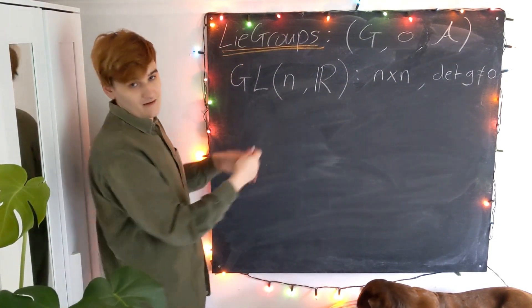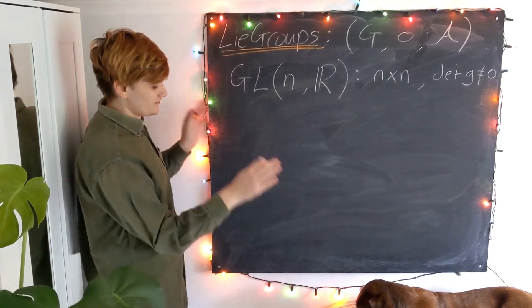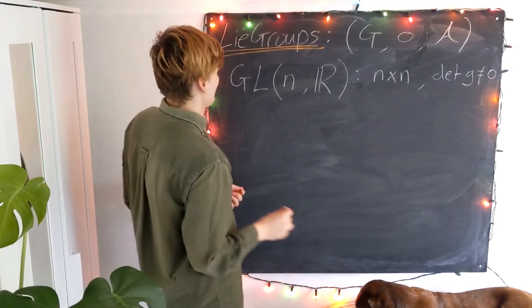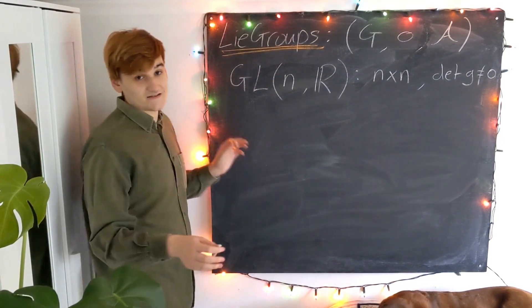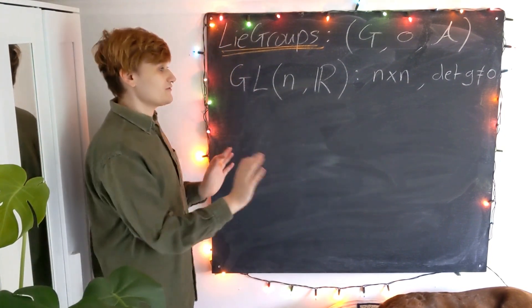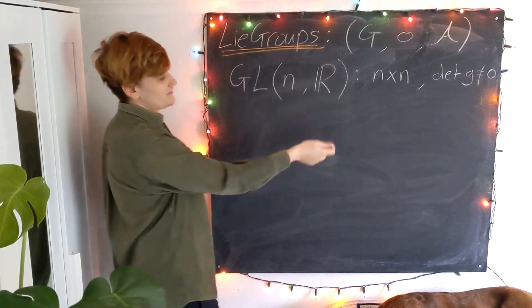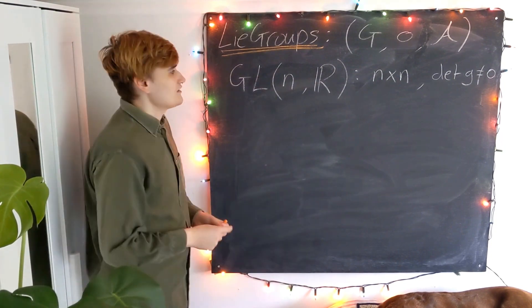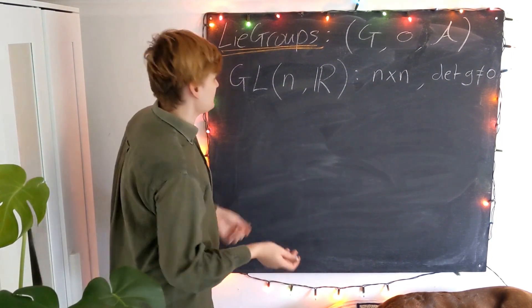So this is a group. I haven't shown it rigorously, just kind of proved it by waving my hands, but essentially this is going to be a group, and it's going to be represented by these n by n matrices. So how on earth is this a manifold?